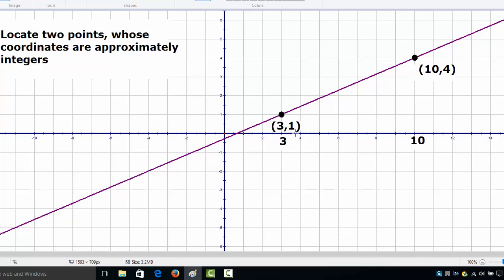So note that when we move from this point to this point the x coordinate changes from x equals 3 to x equals 10. So what we have is that for a run of 7 units, that is from 3 to 10, we have a